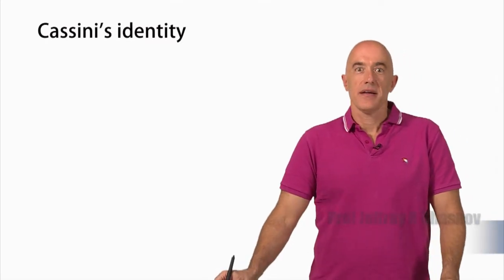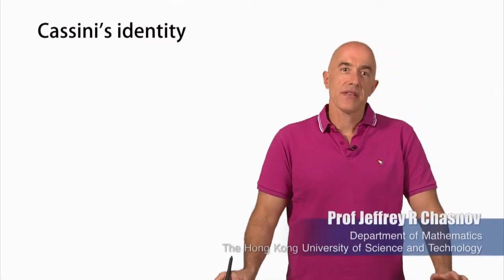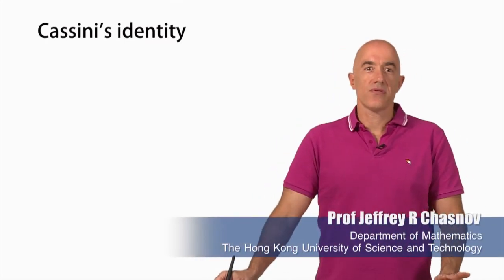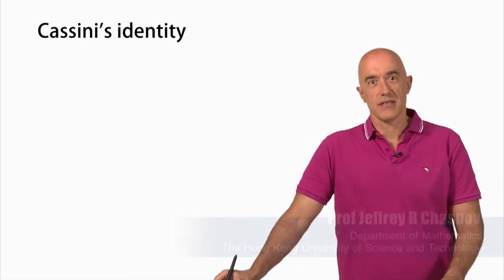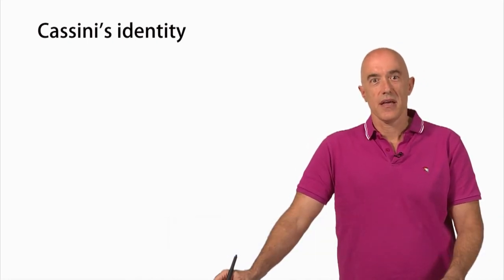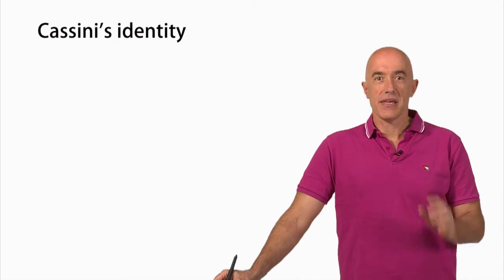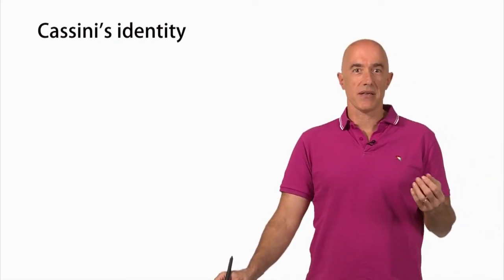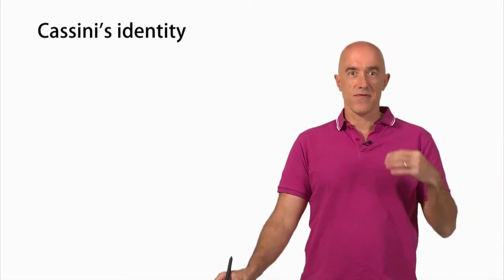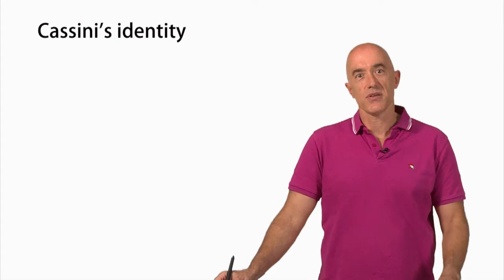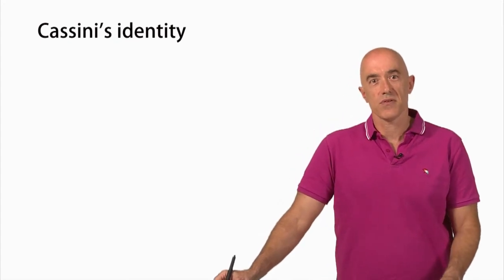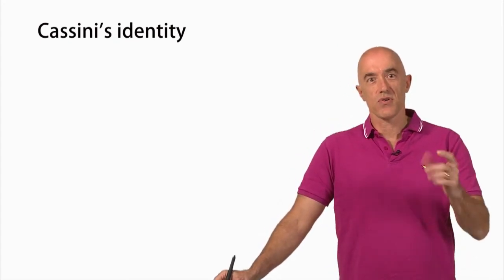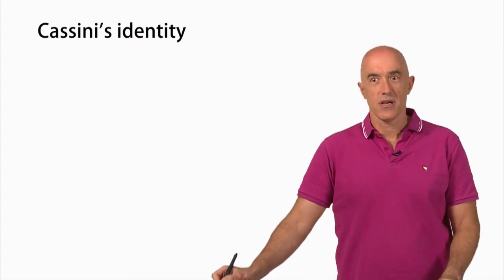Welcome back. In this lecture I want to derive an important identity which is called Cassini's identity. The easiest way to derive this identity is making use of the Fibonacci Q matrix, which we talked about in the last lecture.